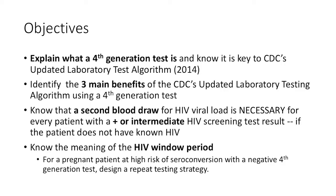I've chosen some objectives. The first one is to explain what a fourth generation test is. It sounds like it's the most recent generation test that we have. Other generations we can lump together as inferior tests that only tested antibodies. The key to the new algorithm is that we're using a fourth generation, a new kind of test, and it changes how we test patients.